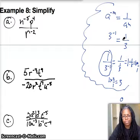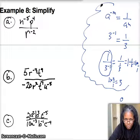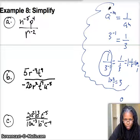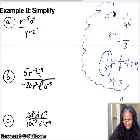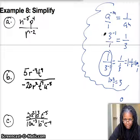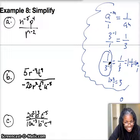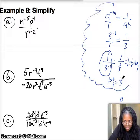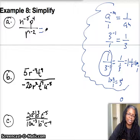So definitely: 1 over 3 to the negative first power is really 3, and 3 to the negative first power is 1 over 3. The key here — the reason why I talk about the flip — is that when you have a negative exponent, you take whatever is being raised to that negative exponent and move it to the opposite place. If it's in the numerator, you move it to the denominator and make the exponent positive. If it's in the denominator, you move it to the numerator and make the exponent positive.